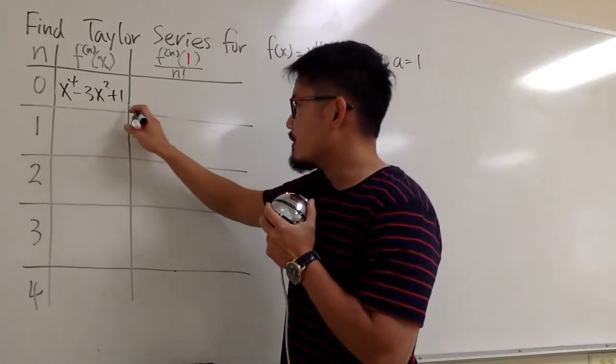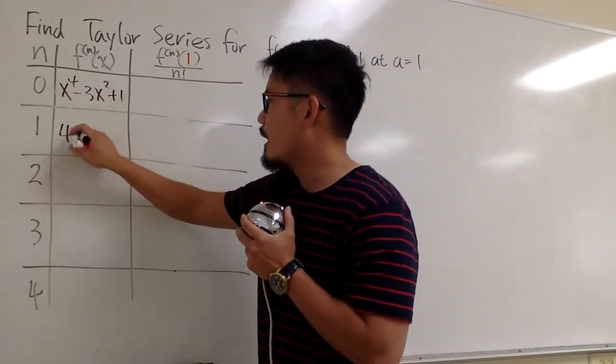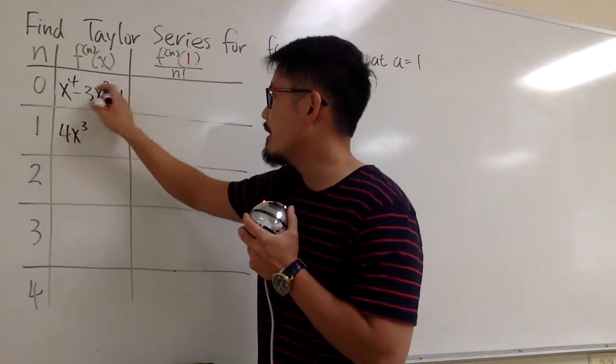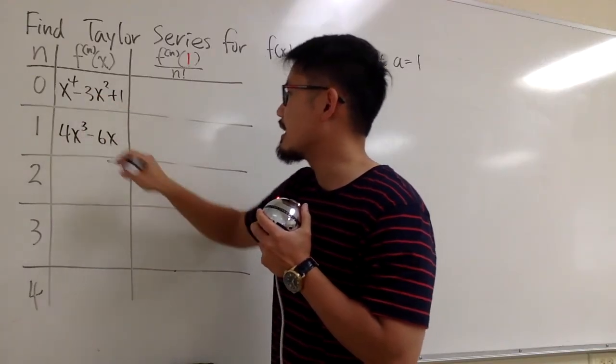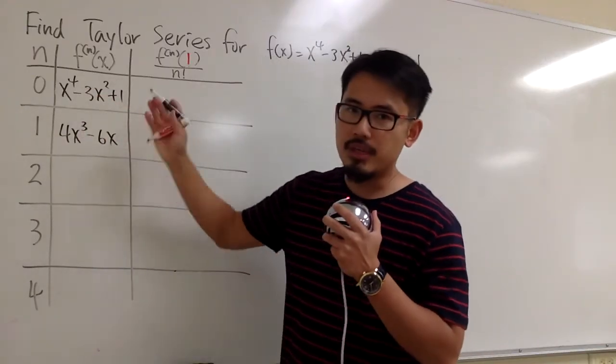So anyways, for the first derivative of this, we will get 4x to the third power, and then minus 6x. And then let's do it again.